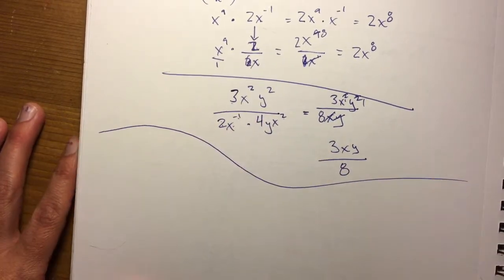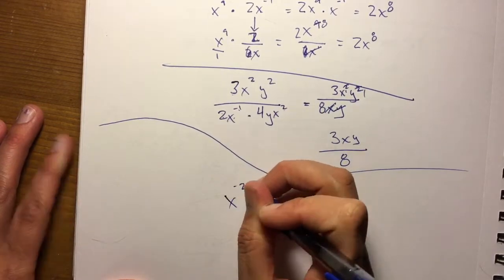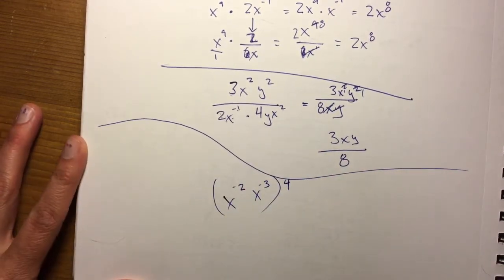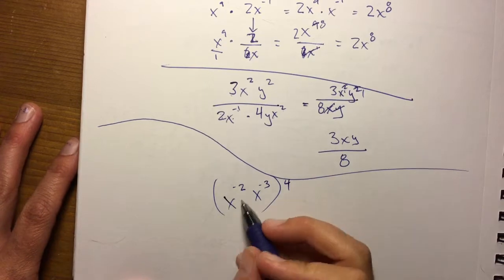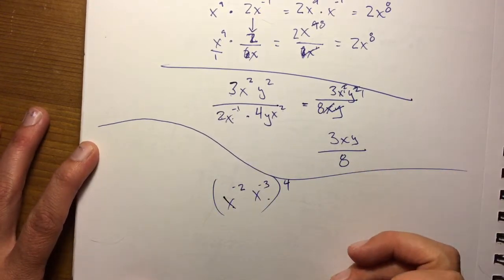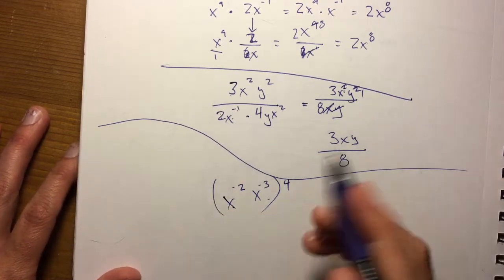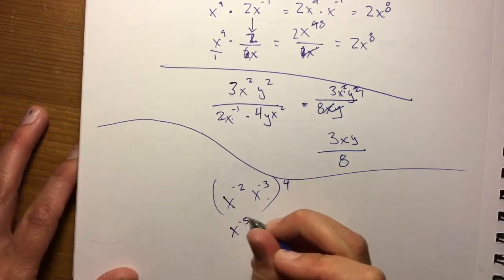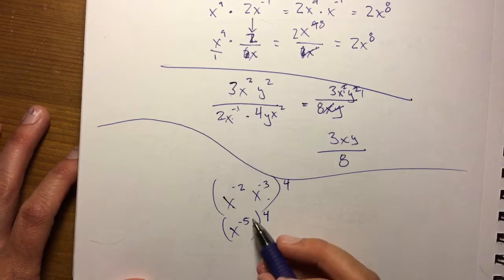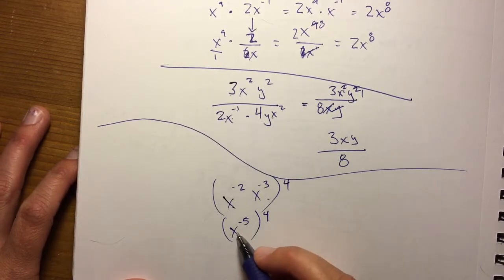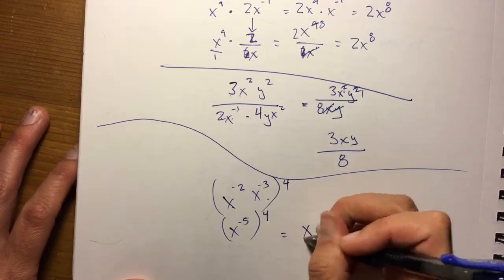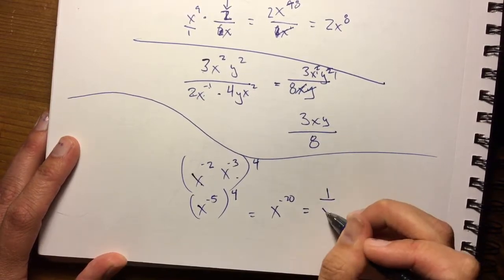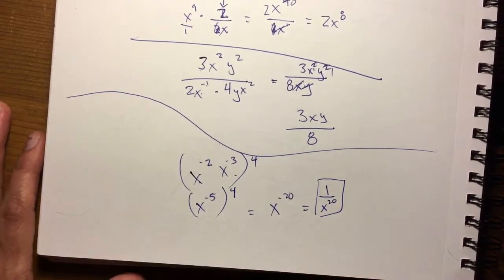Let's look at negative exponents a little bit more. We have (x to the negative 2 times x to the negative 3) to the fourth. Remember PEMDAS — we deal with parentheses first. So x to the negative 2 times x to the negative 3 is x to the negative 5, and then we have the 4 exponent on the outside of the parentheses, so we multiply: x to the negative 5 times 4 gives x to the negative 20. Because it's negative, it automatically goes to the denominator — so it's 1 over x to the 20.